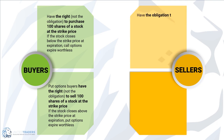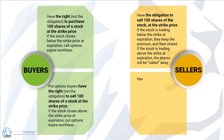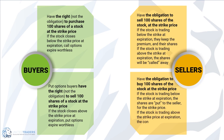Options contract sellers have the obligation to buy or sell 100 share lots of a stock at a given strike price. Call option sellers — for example, covered calls — have the obligation to sell 100 shares of the stock at the strike price. If the stock is trading below the strike at expiration, they keep the premium and their shares. If the stock is trading above the strike at expiration, the shares will be called away. Put option sellers — for example, covered puts or cash-secured puts — have the obligation to buy 100 shares of the stock at the strike price. If the stock is trading below the strike at expiration, the shares are put to the seller at the strike price, which can effectively enter a long position or close a short position. If the stock is trading above the strike price at expiration, the contract expires worthless.